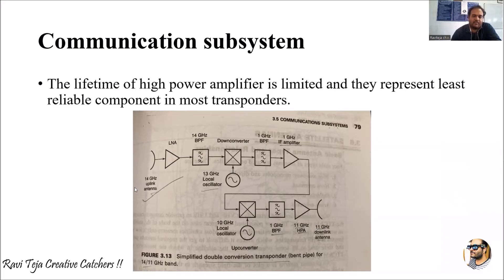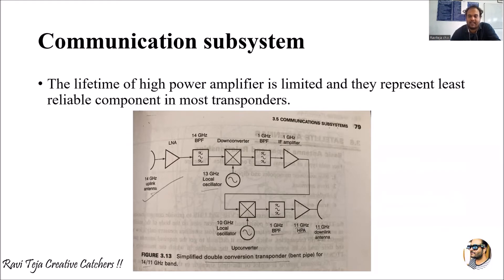In the diagram, initially we have a 14 gigahertz uplink antenna connected to a low noise amplifier. That amplified signal is given to a 14 gigahertz band pass filter, then converted by a down converter using a local oscillator at 13 gigahertz.